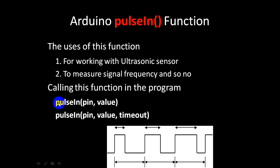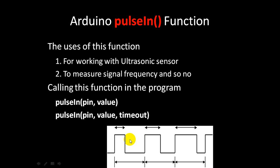There are two ways you can call this function. The first is pulseIn with a bracket, and in this bracket you give two parameters: pin and value. The pin number is the pin on which you will take input. Suppose this is a signal - you want to measure the on time, meaning how many microseconds this signal is on, or how many microseconds it is off.